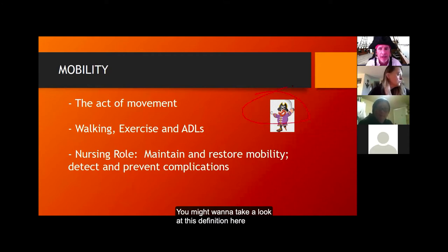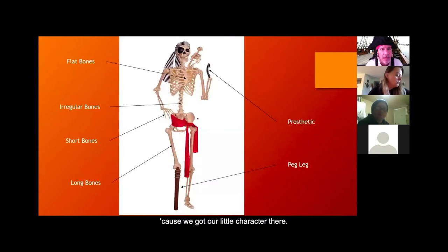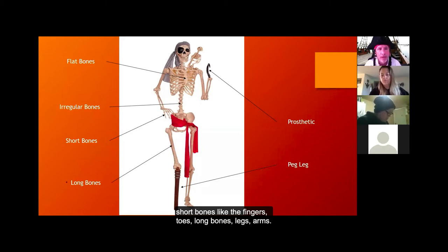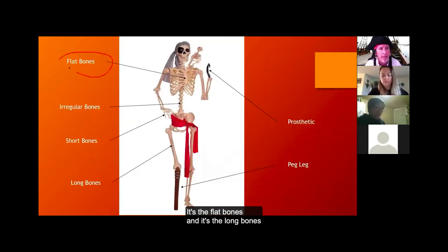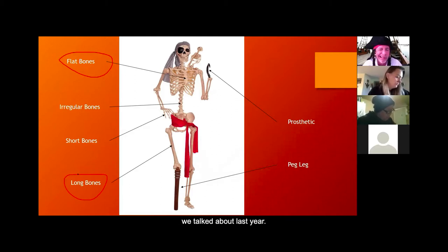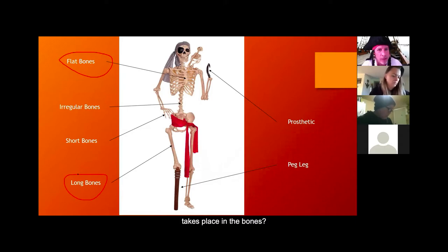Skeletally, we have flat bones, irregular bones, short bones like the fingers and toes, and long bones like the legs and arms. It's the flat bones and long bones where the majority of your red bone marrow is located — where you produce erythrocytes, lymphocytes, and other blood cells. Lymphocyte and erythrocyte production takes place in the bones.